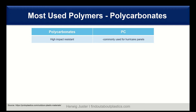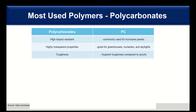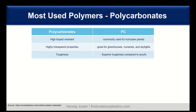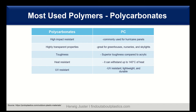The second polymer is polycarbonate, PC. One major property of polycarbonate is its high impact resistance. When you think of certain parts of the world where we have hurricanes, panels made out of polycarbonate can be used to protect against hurricane impact. It also has highly transparent properties, which make it suitable for greenhouses, nurseries, and skylight applications. It is a tough material with superior toughness compared to acrylic. It has heat resistance — it can withstand up to 140 degrees C — and is also UV resistant, together with being lightweight and durable.